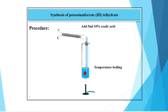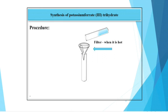Then, dissolve this PPT of FeOH3 by the addition of 5 ml 10% oxalic acid and maintain the temperature to boiling while adding the oxalic acid. Thereafter, filter this solution when it is hot.